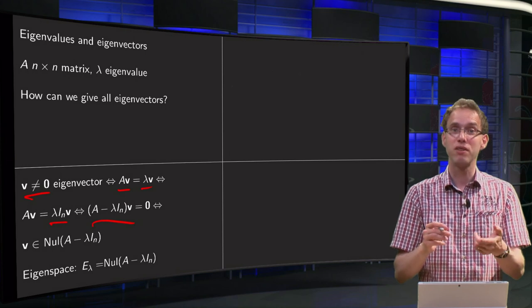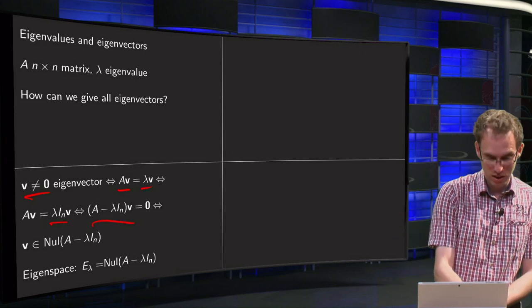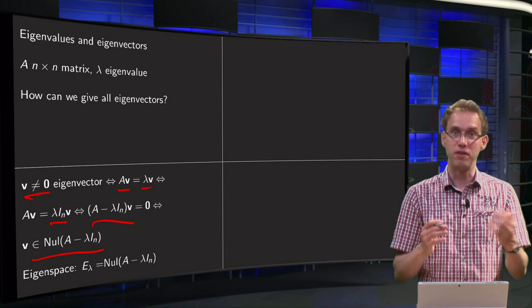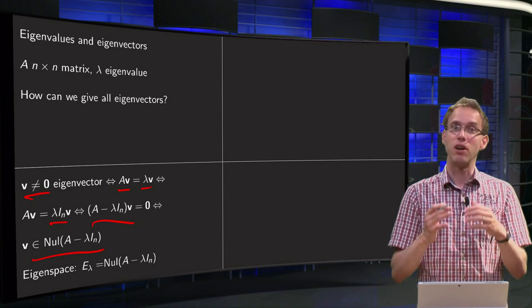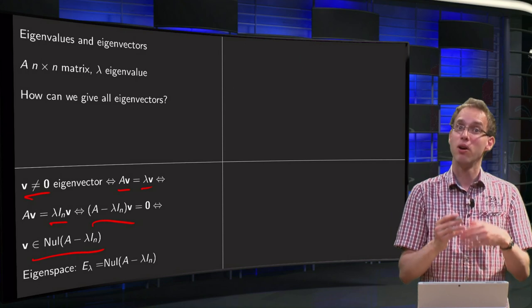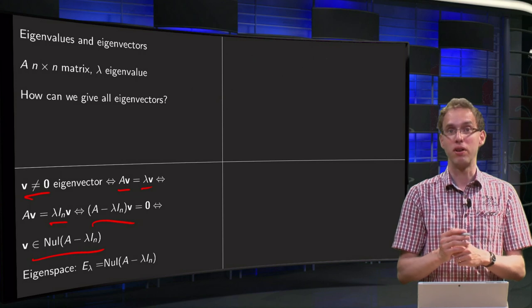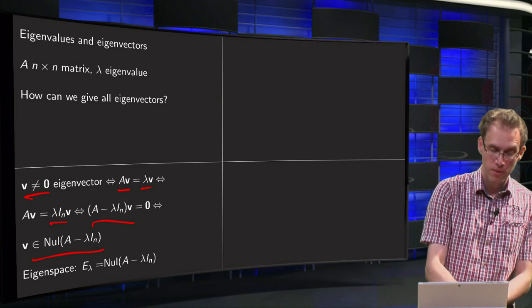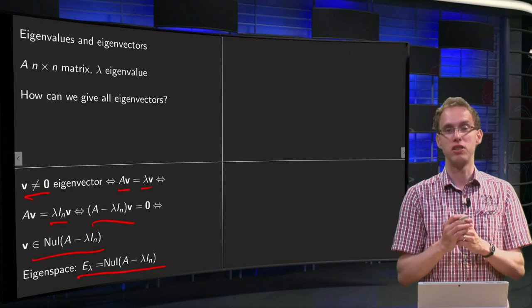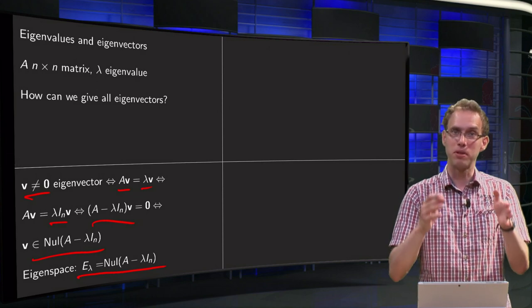So v is an eigenvector if and only if v is in the null space of this matrix over here and if v is not the zero vector. So it motivates us to define the eigenspace of an eigenvalue lambda as follows. The eigenspace is the null space of A minus lambda times the identity matrix.